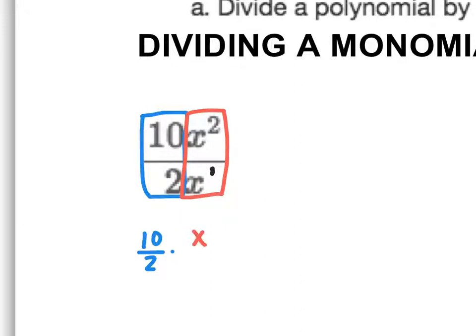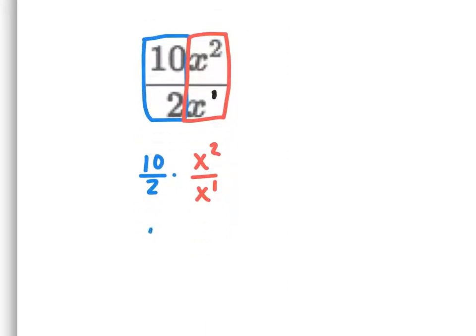I'm going to do that as x squared over x to the first. When I simplify my numbers, 10 divided by 2 is 5. And then x squared divided by x to the first becomes x to the 2 minus 1 power. As a result, this gives me 5 times x to the first, or just 5x.